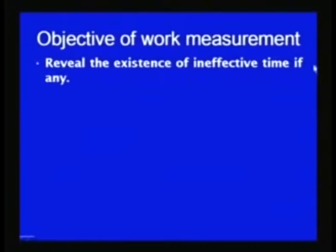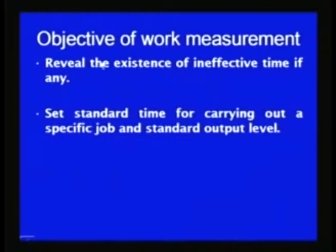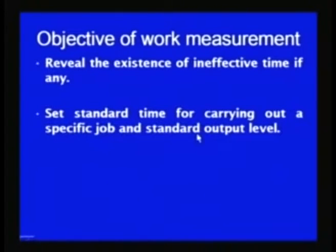The objectives of work measurement are mainly to find out the presence of ineffective time and its extent in the existing method, so that it can be eliminated by carrying out proper method study. Revealing the existence of ineffective time provides the venues for method study so that the method of doing a particular job can be improved. Another important objective is to set the standard time for carrying out a job and also to set the standard output level, so that proper production planning and other important activities can be carried out.